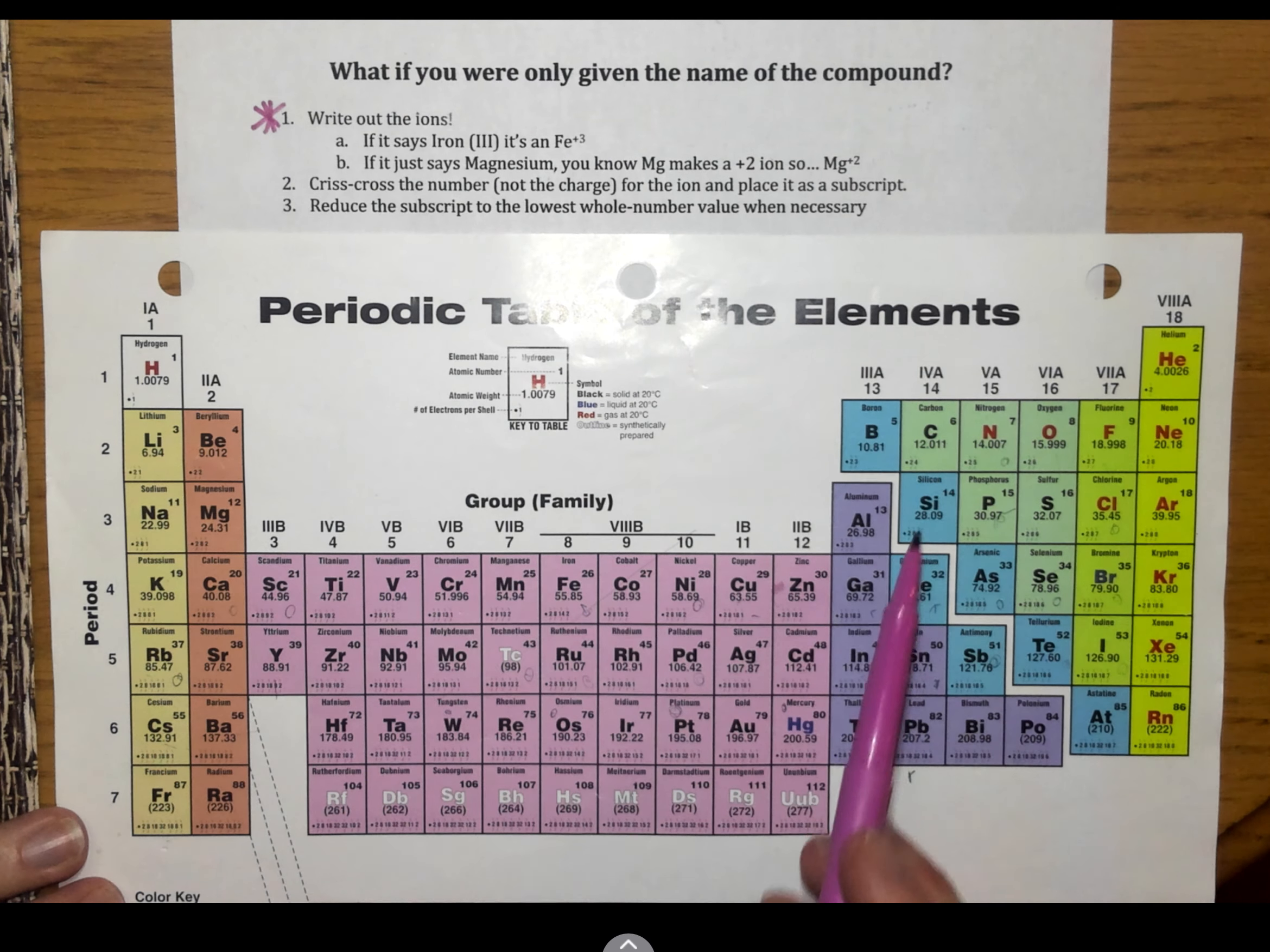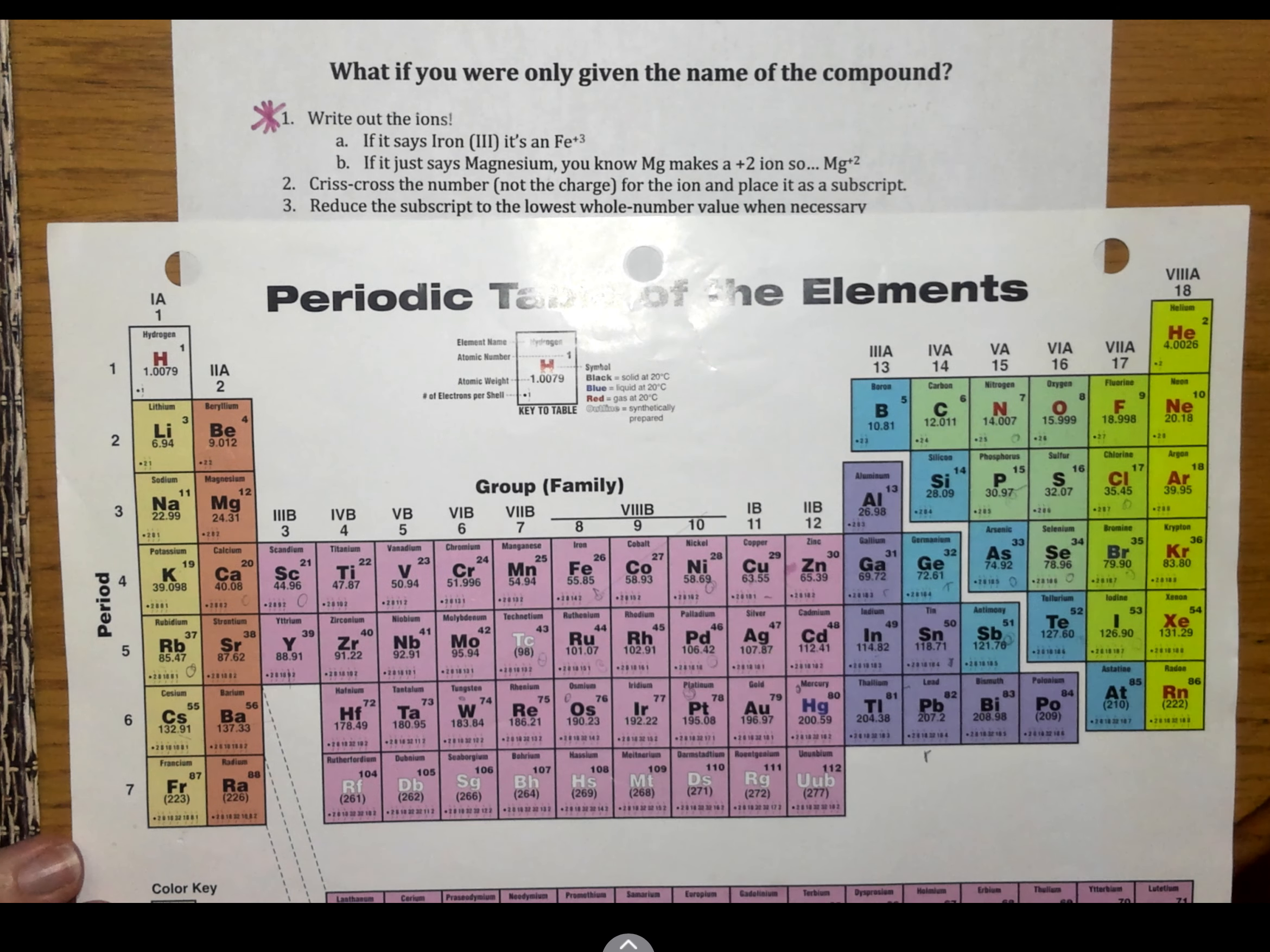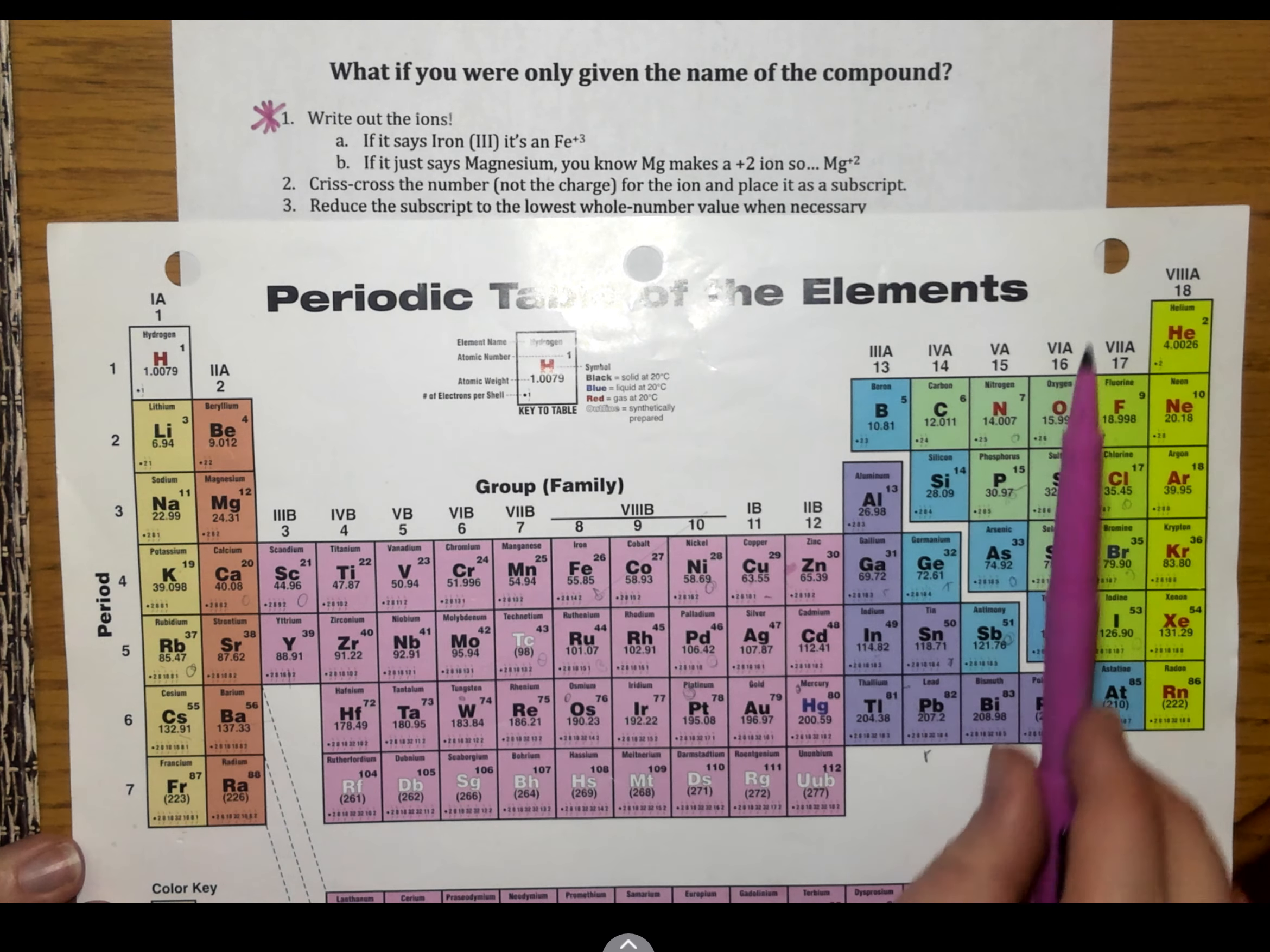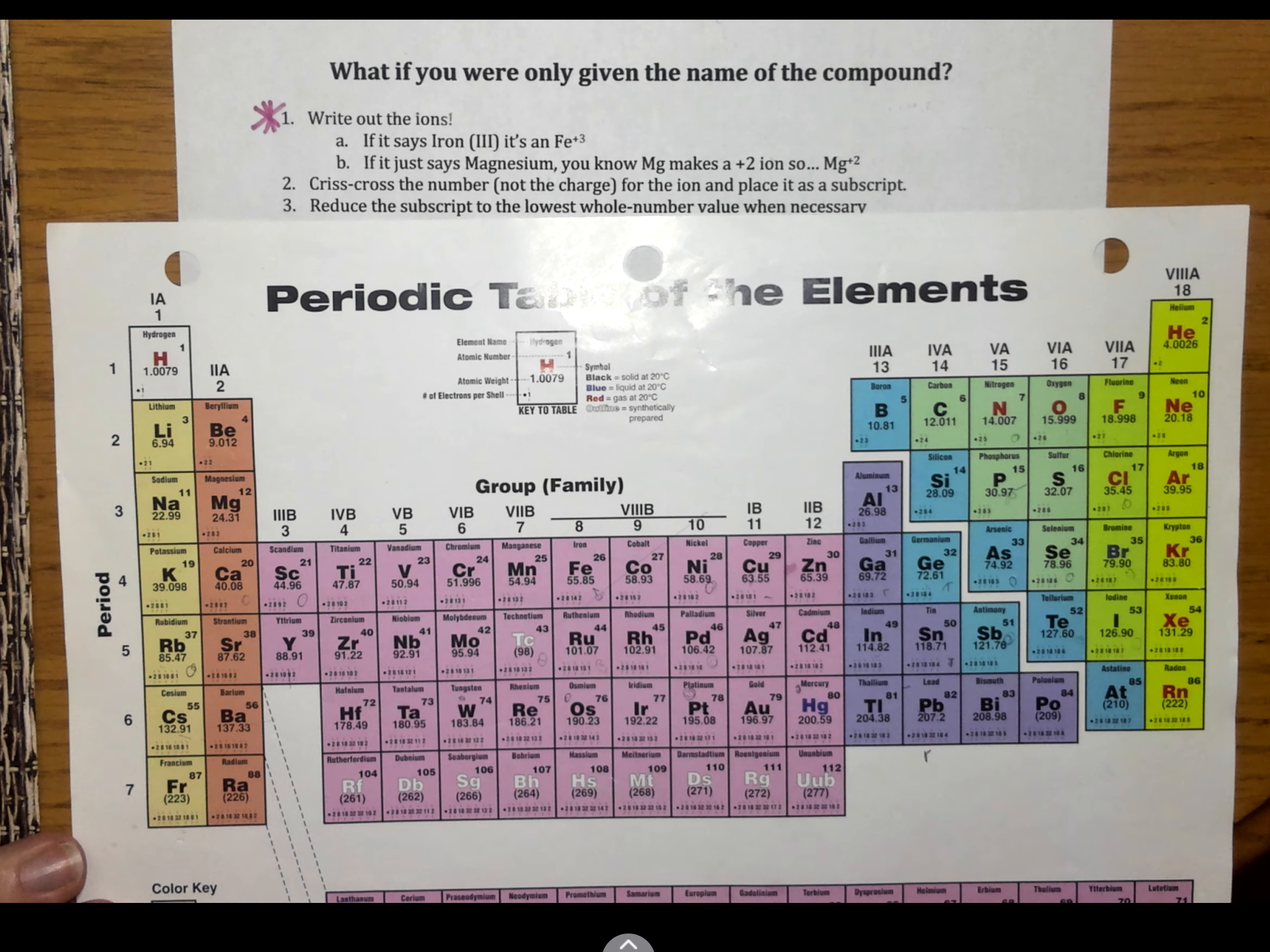Now, I told you guys when we were first doing the periodic table that every element in group 1 makes a plus 1 charge because they all have one valence electron. Every element in group 2 makes a plus 2 ion. Then we skipped the middle, and then group 3 is plus 3.